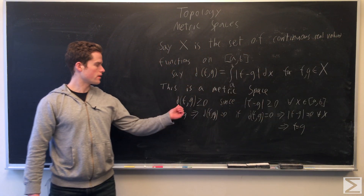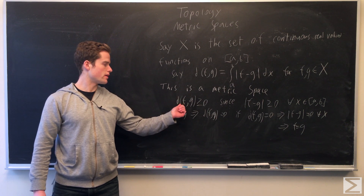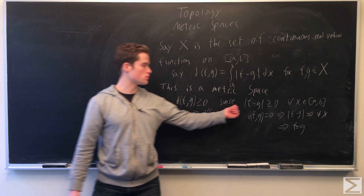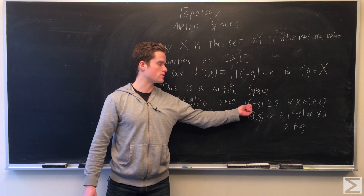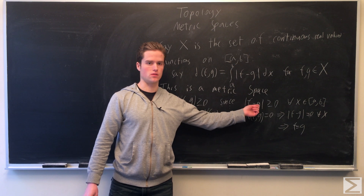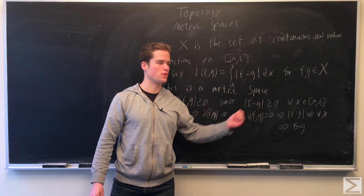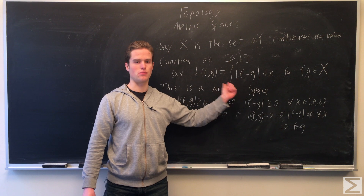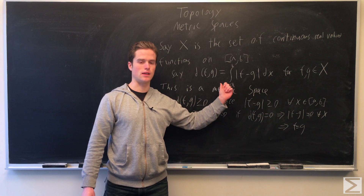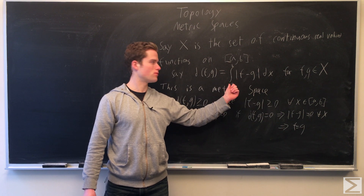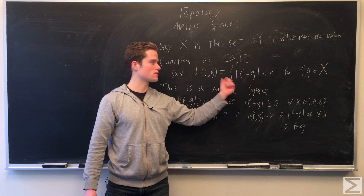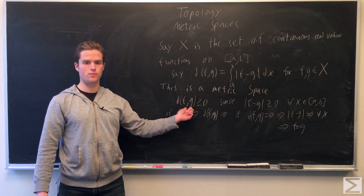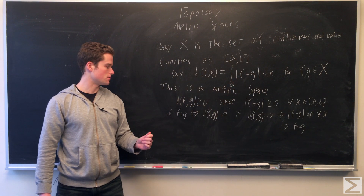We can quickly assert that d(f, g) is greater than or equal to zero, simply because the absolute value of f minus g is greater than or equal to zero for any x in the closed interval [a, b]. Since the integral is just the limit of a sum of non-negative numbers, it is clearly going to be non-negative. So we have our first axiom.